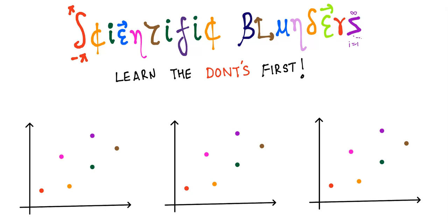Hello friends, welcome back to Scientific Blunders, where you learn the don'ts first. Today I am going to explore a physical interpretation of linear regression. This is not the traditional way that linear regression is taught, but it is definitely going to give you a very unique perspective of a concept that is traditionally taught in a more statistical, mathematical way. This video assumes that you have a basic understanding of linear regression, so if not, I encourage you to watch one of the many videos on linear regression out there. And then you would be able to appreciate this video much better. So having said that, let's get started.